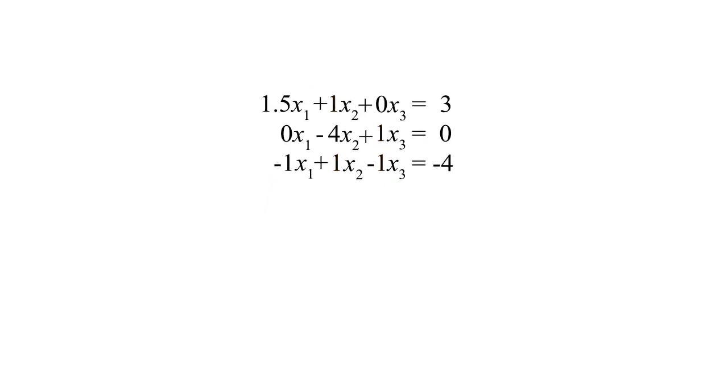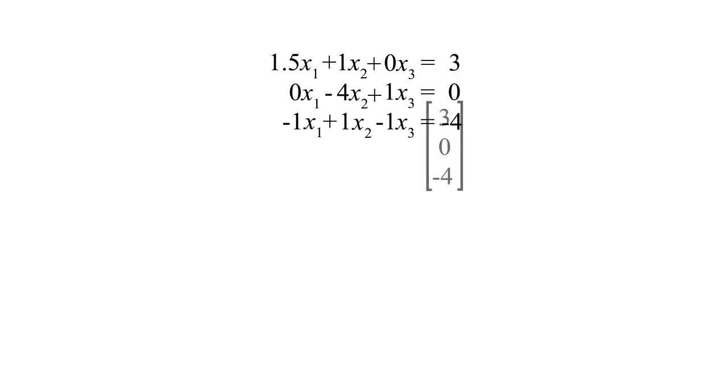Now that our equations are organized, we form a column vector from the constants on the right side of the equations and a matrix from the coefficients on the left.